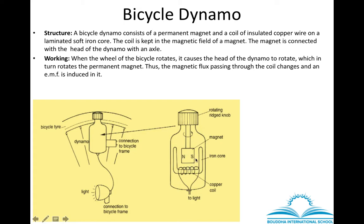In summary: when the wheel rotates, the head of the dynamo joined to the wheel also rotates. The magnet connected to the head starts rotating, and the magnetic lines of force produced by the magnet — the magnetic flux — changes. Since the coil of wire is nearby, the electrons in the wire start moving, meaning electricity is produced, which makes the bulb glow. This is how the bicycle dynamo functions.